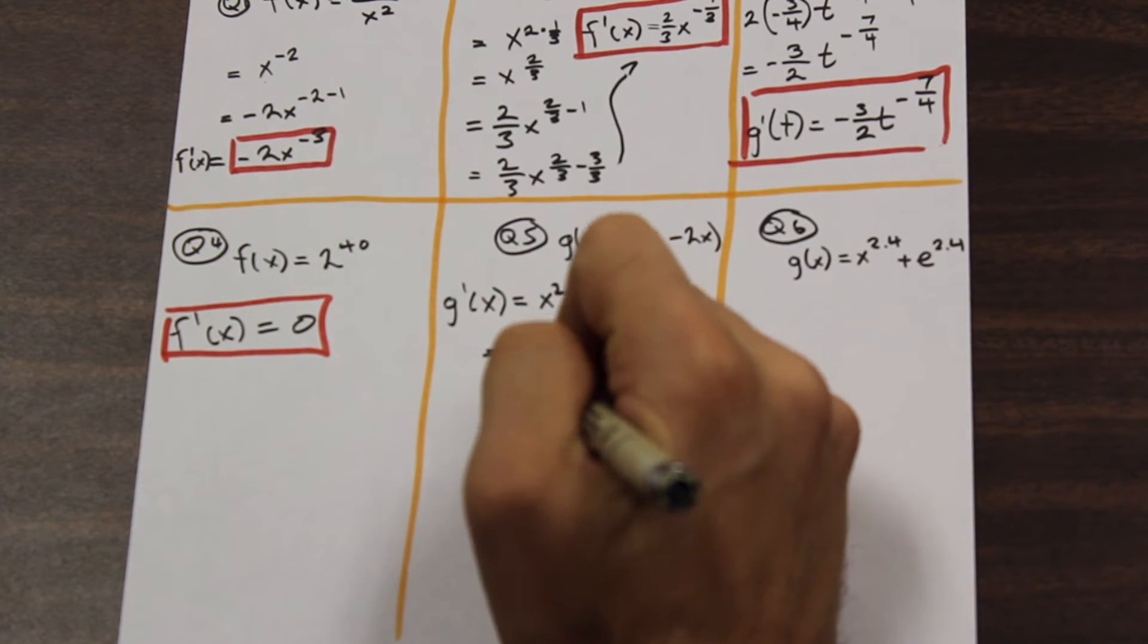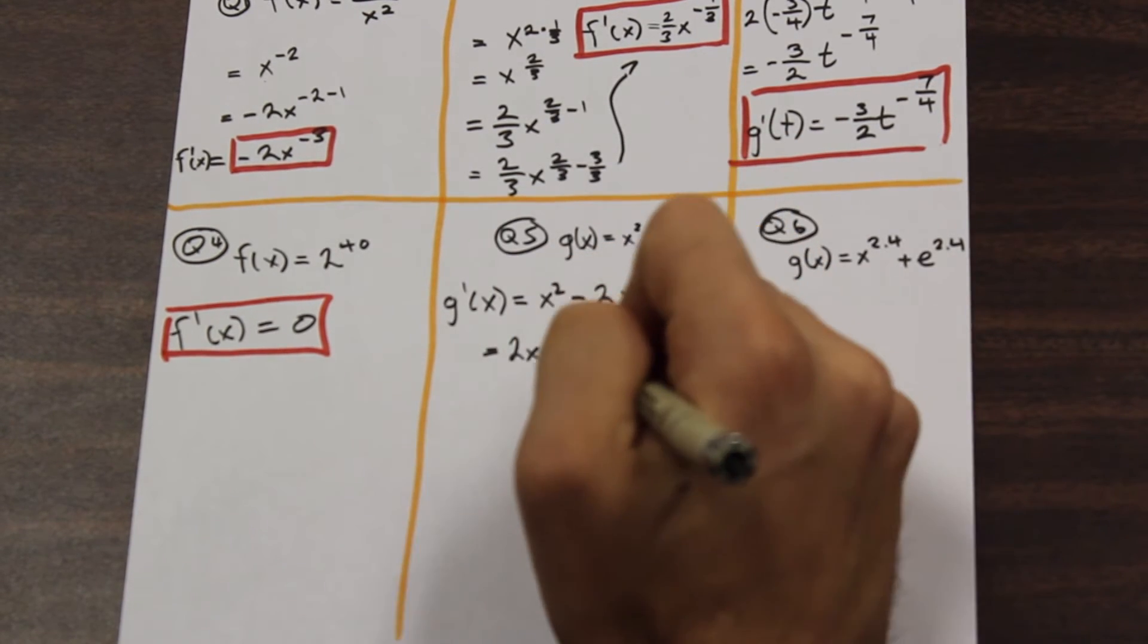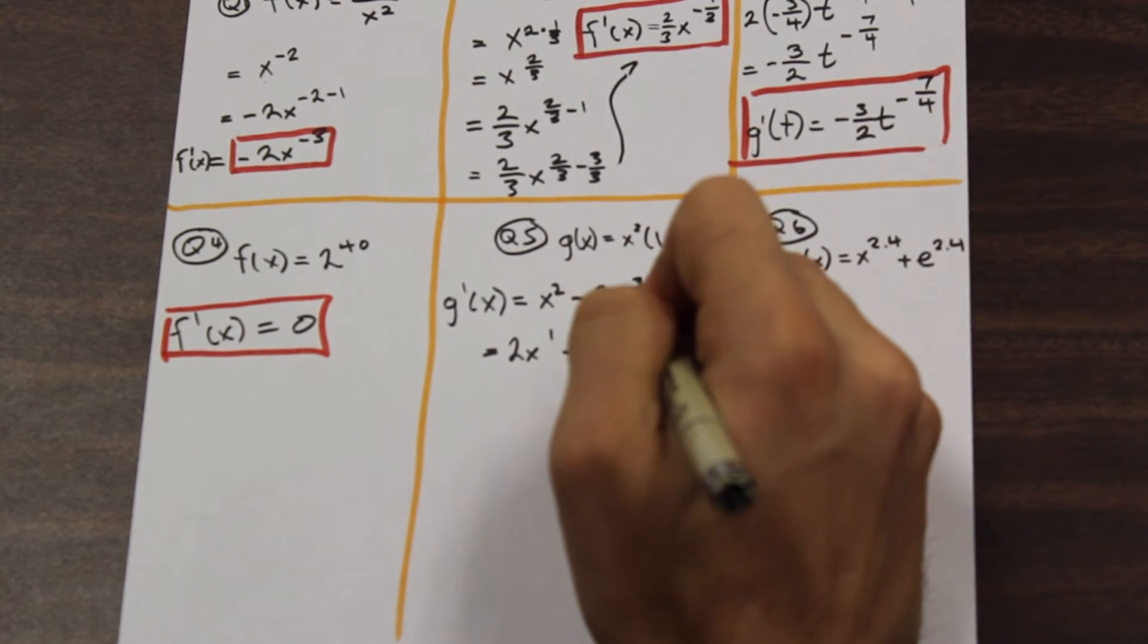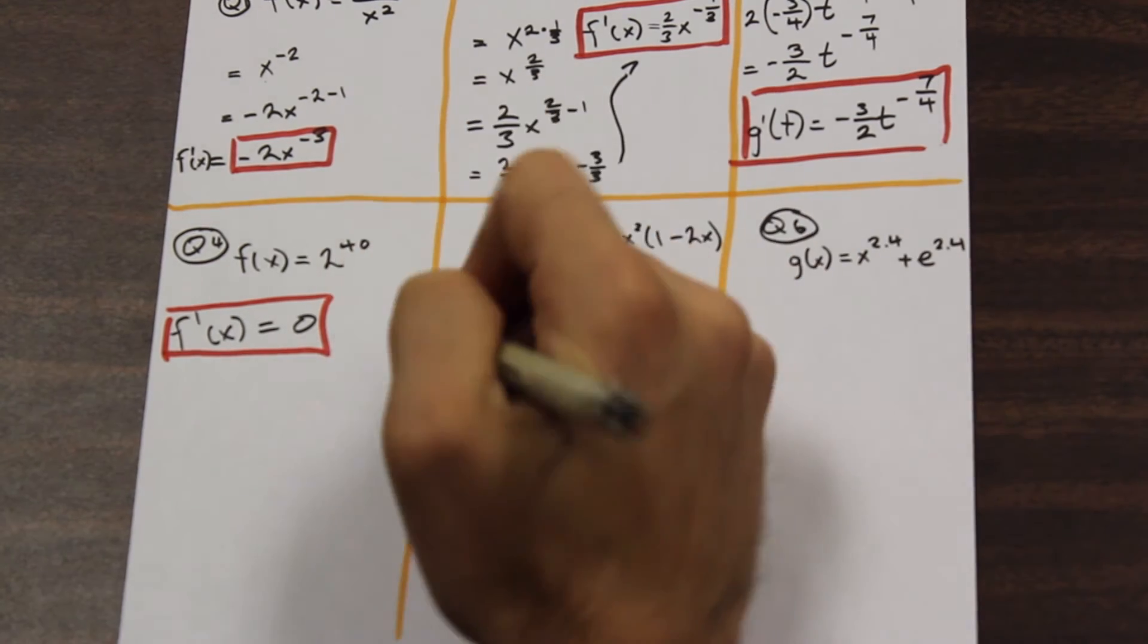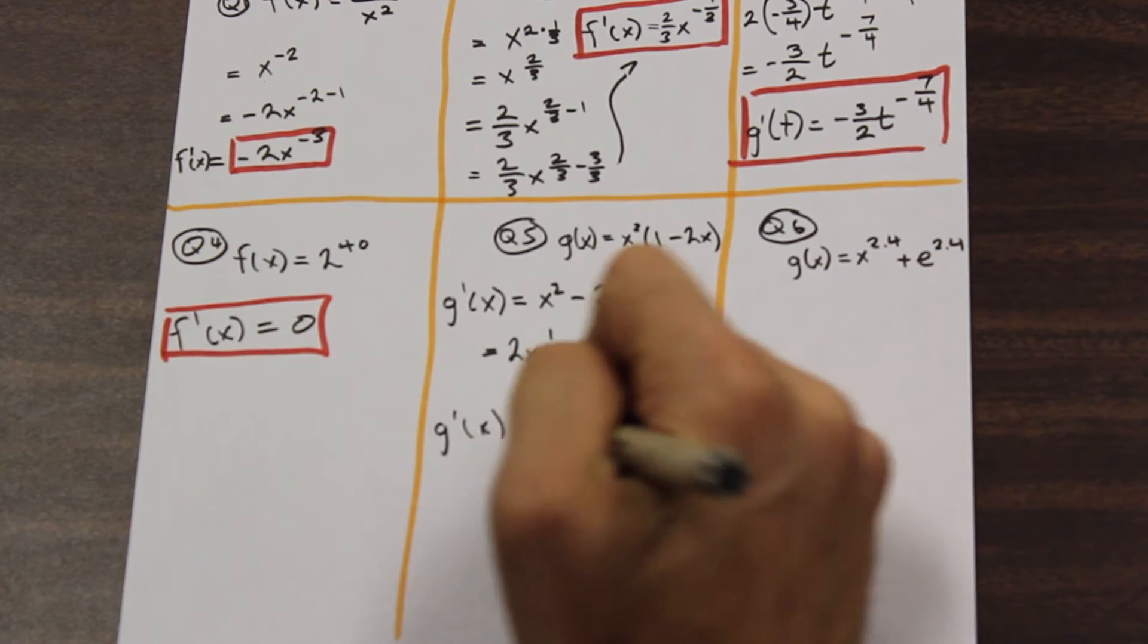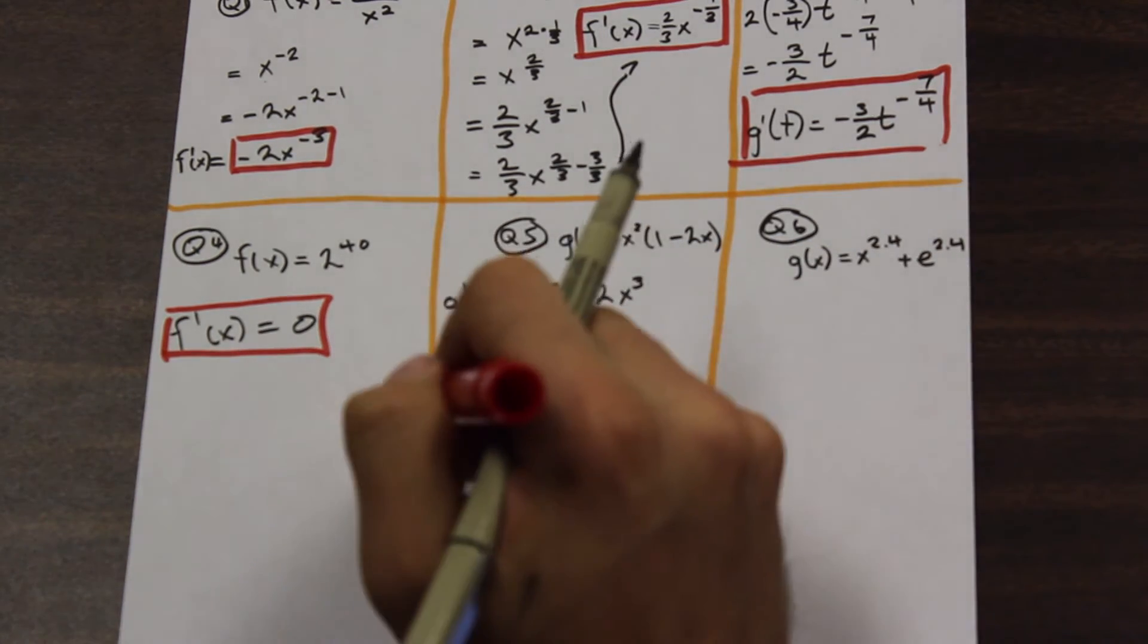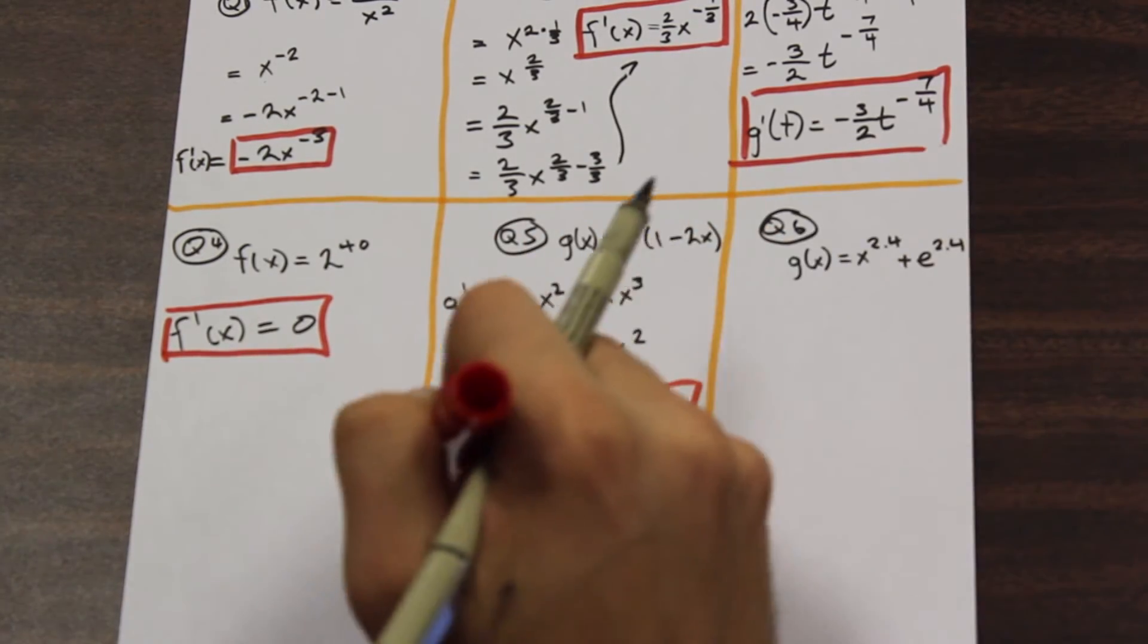So bring the 2 down. So we're going to have 2x to the power of 2 minus 1, which is just 1, minus 3 times 2, which is 6x, 3 minus 1 is 2. And it's as simple as that. So 2x minus 6x squared. And I will just do the final one because it's fairly quick.